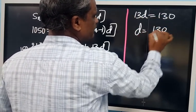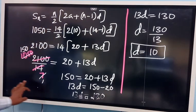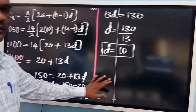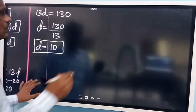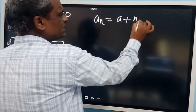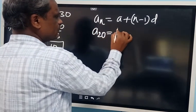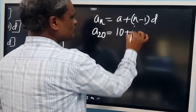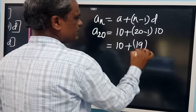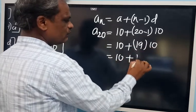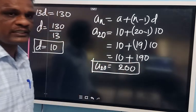So the common difference D equals 10, and A is also 10. Now we can find the 20th term using the nth term formula: AN = A plus (N minus 1) into D. So A20 equals 10 plus (20 minus 1) into 10, which is 10 plus 19 into 10 equals 10 plus 190 equals 200. So the 20th term of this arithmetic progression is 200. This is the solution.